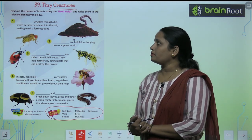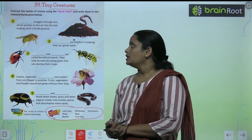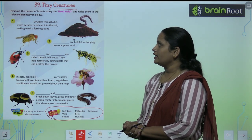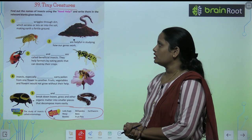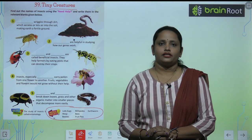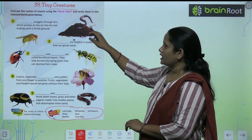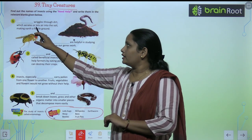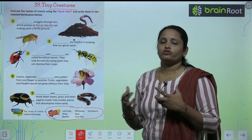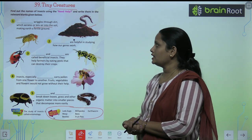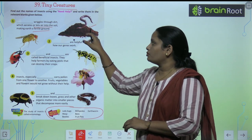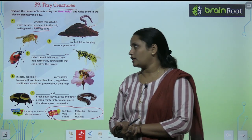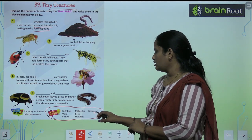And write them in the relevant blanks given below. So here the first one is: wriggles through dirt which aerates — that is, lets air into the soil — making it fertile ground. Yeh ek aisa insect hai jo dirt mein ghoomta hai aur air ki quality ko soil mein improve karta hai, aur ground ko mix karke fertile kar deta hai. So this animal is called earthworm.